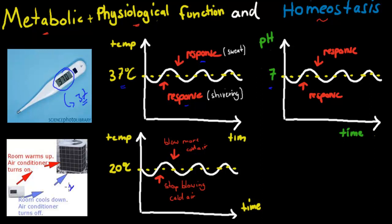An example of an air conditioner illustrates the same kind of mechanism. Say we want to keep our room temperature at 20 degrees Celsius. If it goes too high, the aircon blows more cold air, bringing it back to that set point. If it goes too low, it stops blowing cold air and lets it rise back up. These two responses are there to control room temperature.